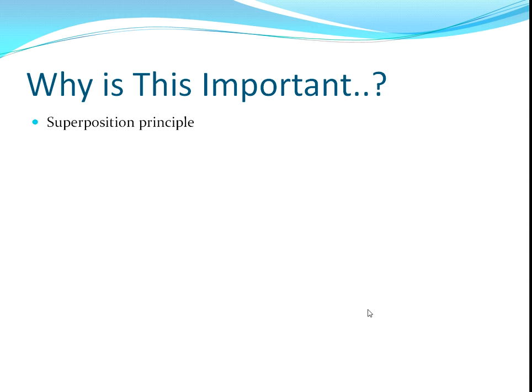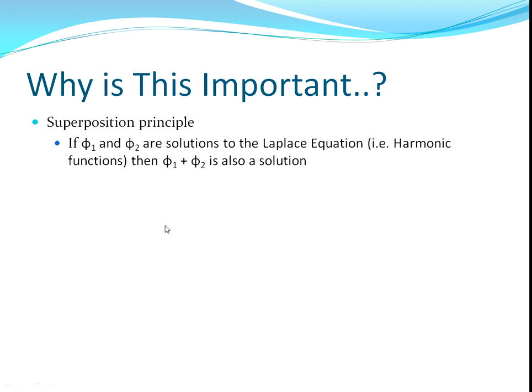Well, it comes down to the superposition principle. This is the fundamental idea in a lot of potential flow theory. So, if you have potential functions phi 1 and phi 2, and these are solutions to the Laplace equation, we call solutions to the Laplace equation harmonic functions. Then, if we add these two, the result of adding them is also a solution.